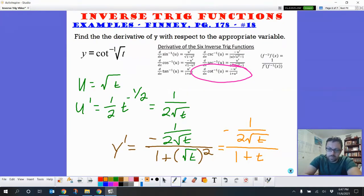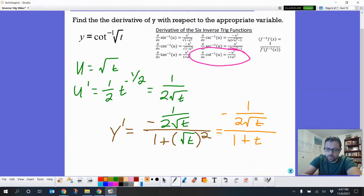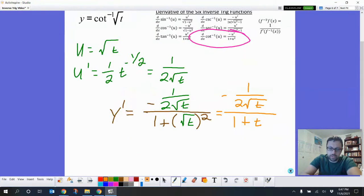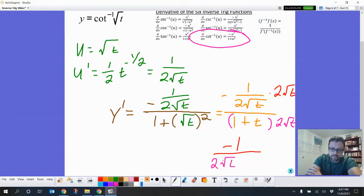So we get negative 1 over 2 square roots of t over 1 plus t. And then we can multiply both of those by 2 square roots of t, so we don't have a fraction in a fraction. So this multiplied by 2 square roots of t becomes just a negative 1 over the denominator being multiplied by 2 square roots of t is just all that: 2 square roots of t times 1 plus t. And that's our y prime. That's it.